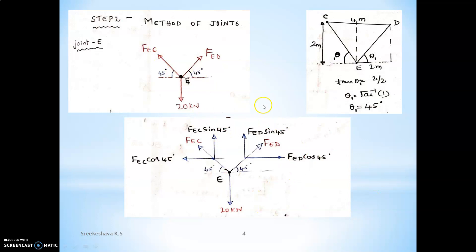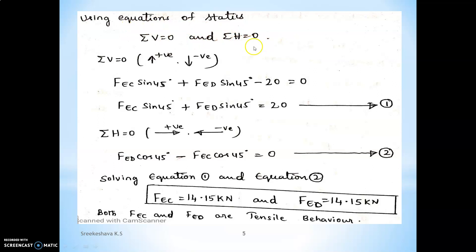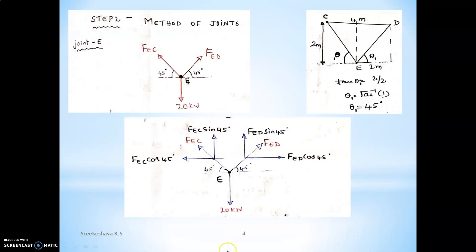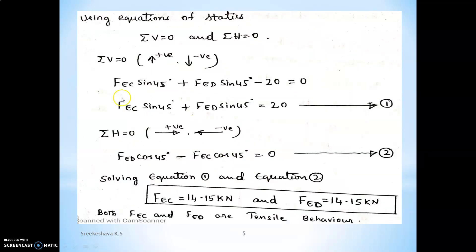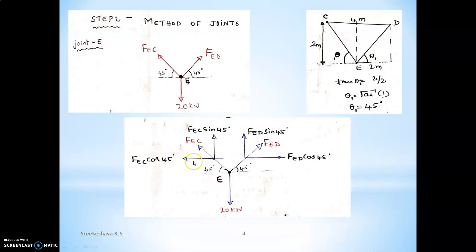This is the free body diagram for joint E. Applying equations of static equilibrium with sign convention — upward forces positive, downward negative for sigma V; rightward forces positive, leftward negative for sigma H. Applying sigma V equals 0: F_EC sin 45 plus F_ED sin 45 minus 20 equals 0. Applying sigma H equals 0: minus F_EC cos 45 plus F_ED cos 45 equals 0.